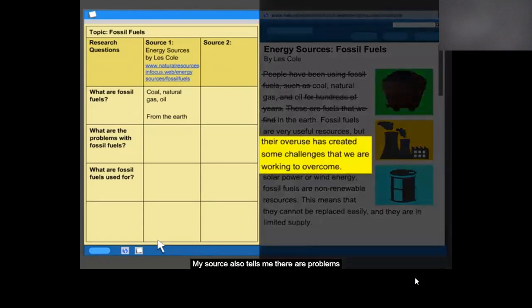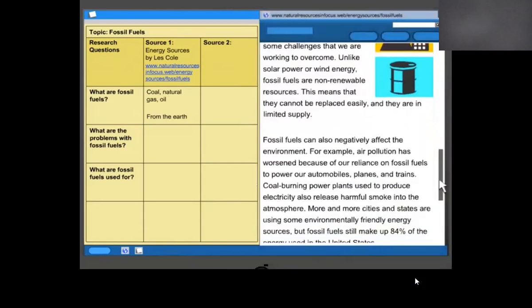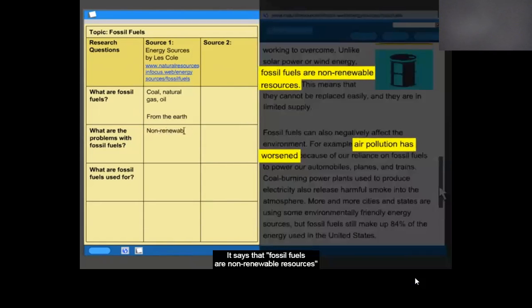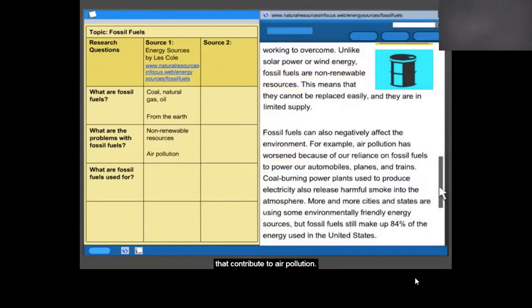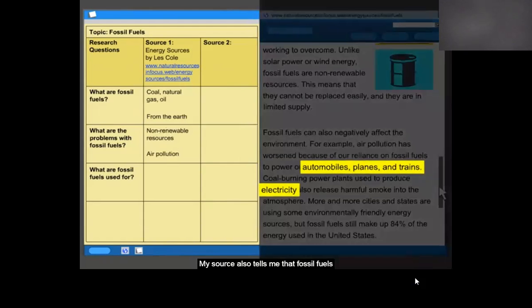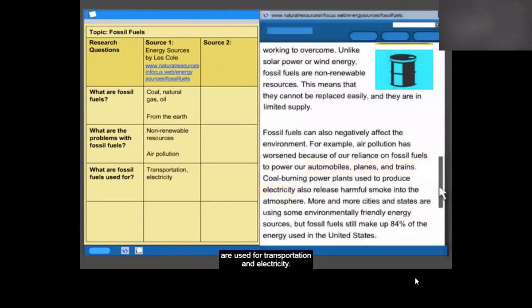My source also tells me there are problems with fossil fuels. It says that fossil fuels are non-renewable resources that contribute to air pollution. These are facts I'll add to my chart. My source also tells me that fossil fuels are used for transportation and electricity. I'll add these facts as well.